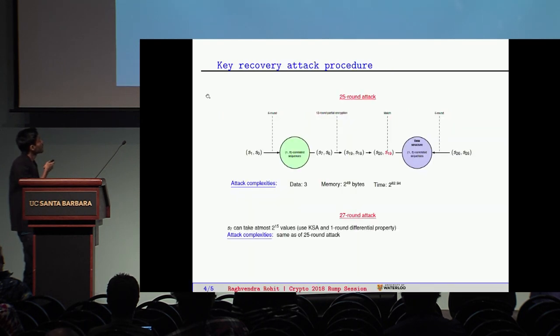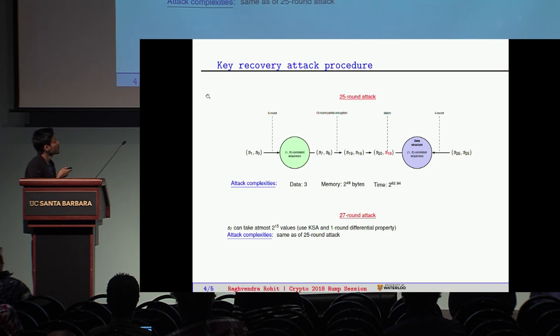We use these sequences for six forward rounds, six backward rounds and do partial encryption just for 12 rounds. The overall time complexity is limited by this term for 25 rounds.